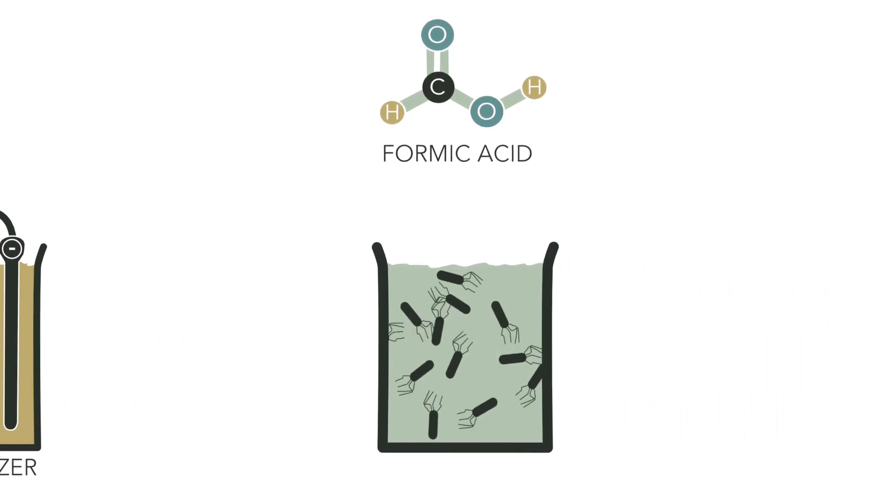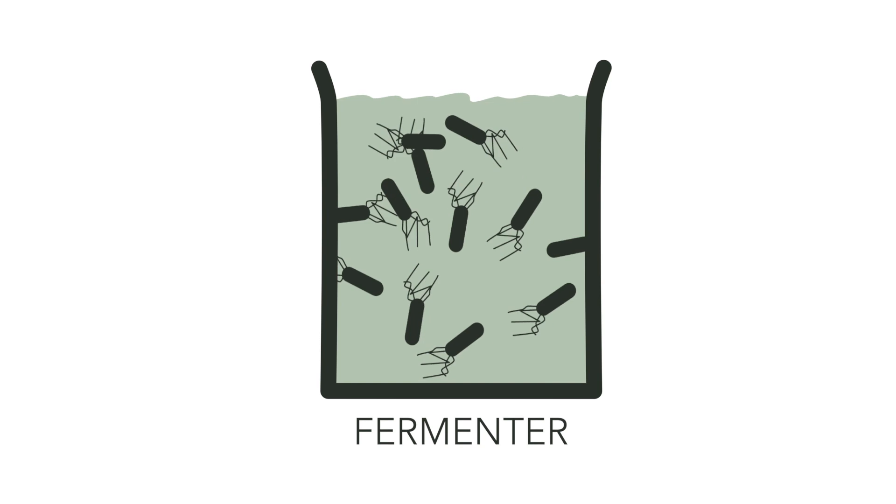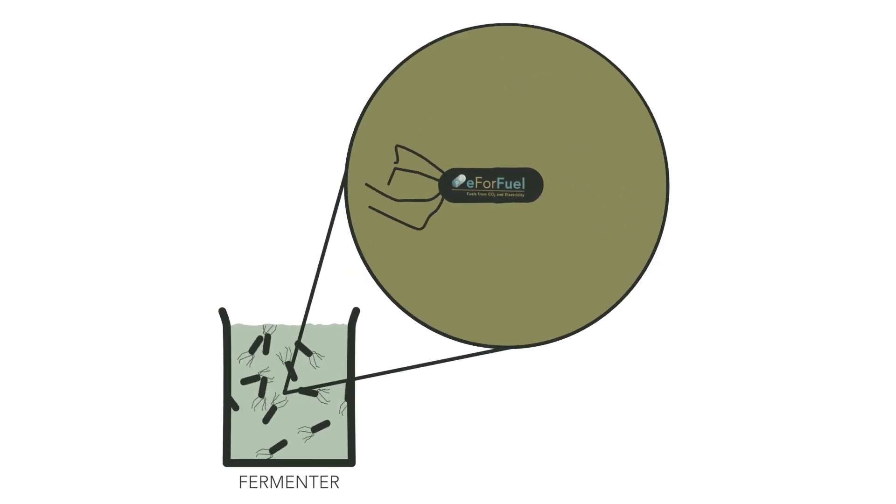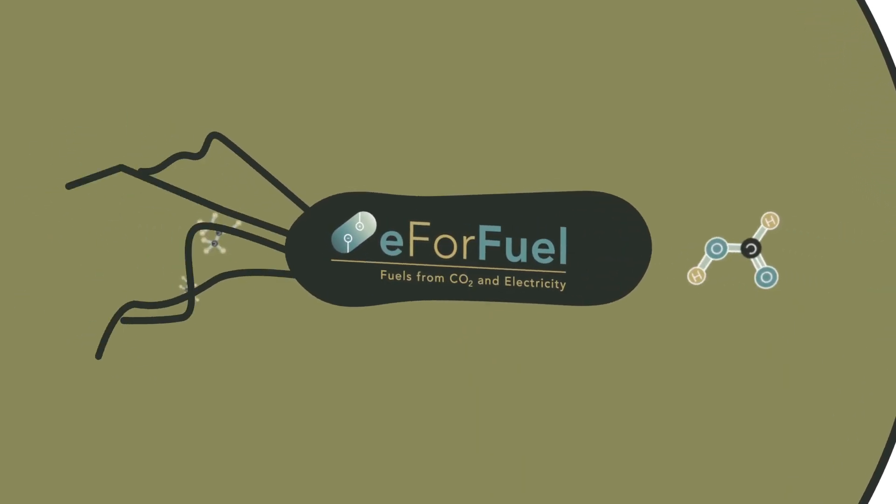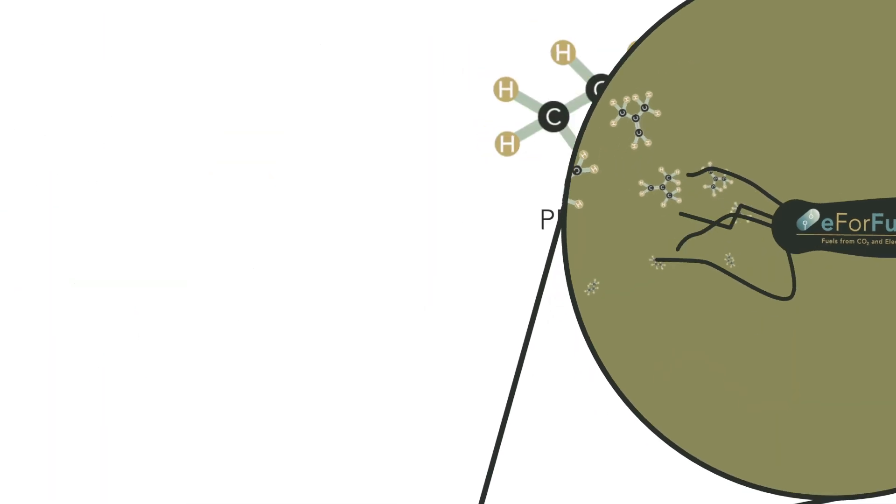In stage two, the formic acid is transferred into a fermenter, another vessel where bacteria can be grown. It will host a special strain of E. coli bacteria. They are able to digest the formic acid and produce substances called propane and isobutane.